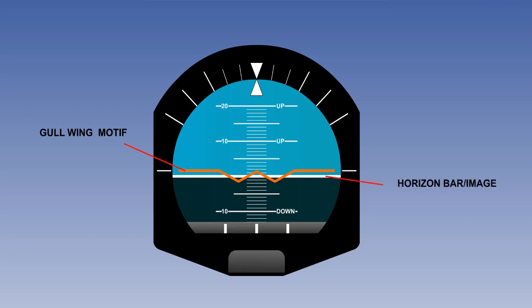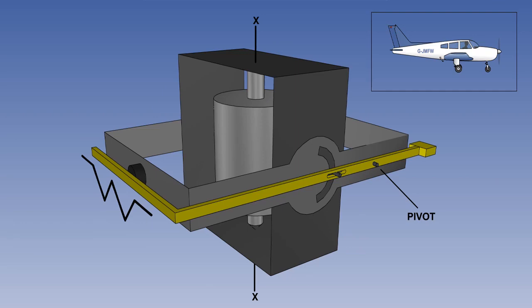Behind the glass is a horizon bar or image, which is attached to or linked to an earth gyro, which stabilises the horizon image in the earth horizontal. An earth gyro has its spin axis tied to or maintained in the vertical by the earth's gravity. In this diagrammatic representation, we can see that the gyro rotor is attached to the inner gimbal, whereas the outer gimbal will be attached to the instrument case.